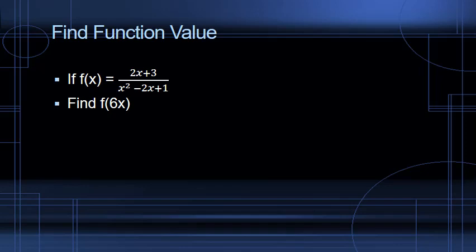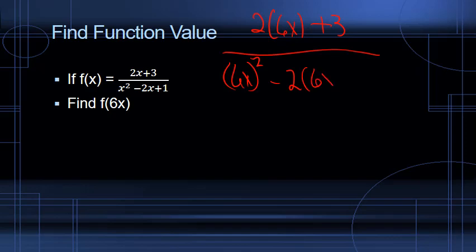We've got the same function equation, f of x equals 2x plus 3 over x squared minus 2x plus 1. This time we're asked to find f of 6x. Again, we're going to substitute 6x for every place that we see an x in our function equation. So now we've got 2 times 6x plus 3 over 6x squared minus 2 times 6x plus 1.